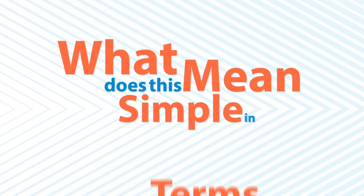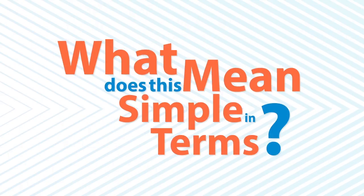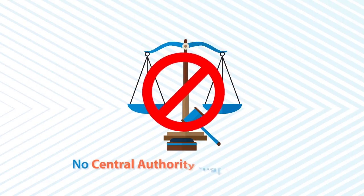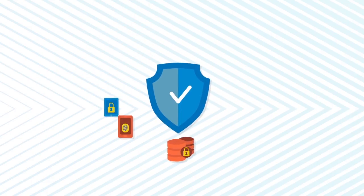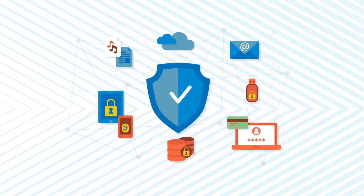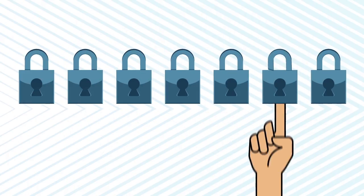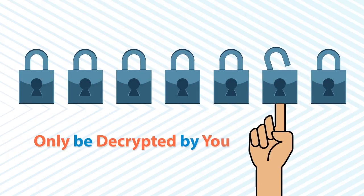What does this mean in simple terms? Well, it means that there is no central authority that controls it. This means that you can access the data without having to worry whether your cloud host is having server or database issues. The data is secure — all transactions on the blockchain are encrypted and your transactions can only be decrypted by you.